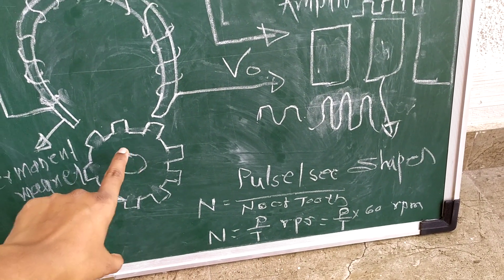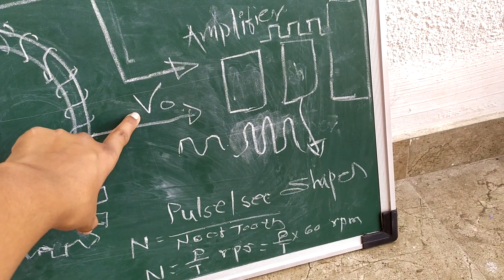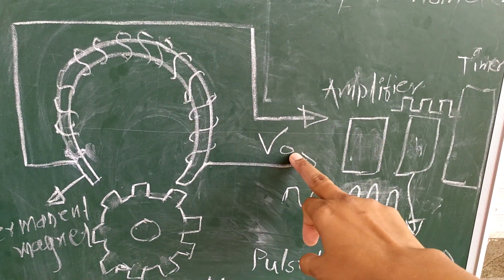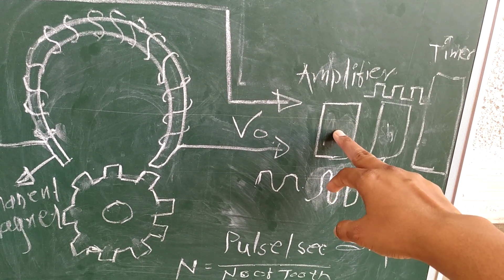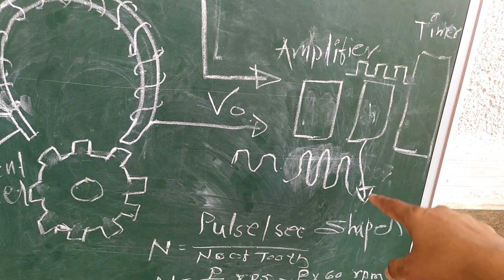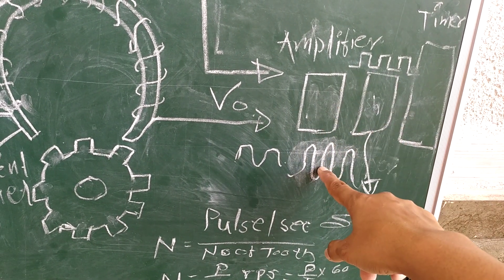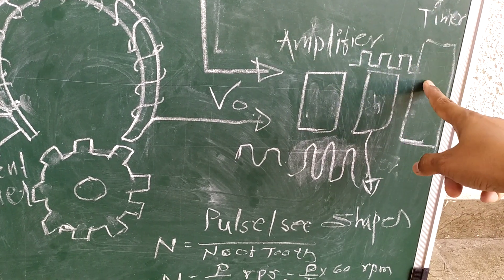The coil terminals are taken here to get the output voltage. This output voltage, or the pulses generated, is sent to the amplifier to amplify the signal. From the amplifier, it is sent to the shaper, which converts sine waves into square waves.